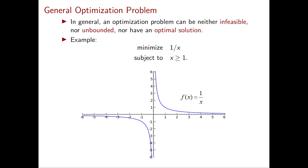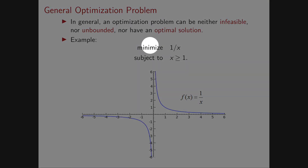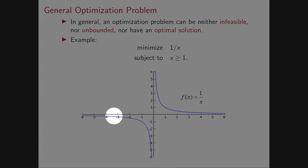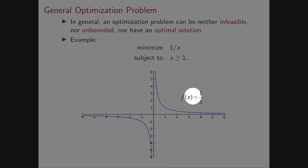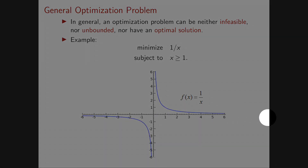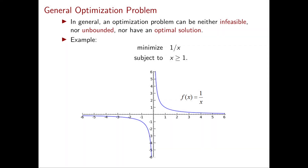Here is a simple example: minimize 1/x subject to x ≥ 1. The feasible region starts at 1 and goes to infinity. The objective value at 1 is exactly 1 and decreases as x increases. The value keeps decreasing forever, getting as close as you want to 0, but it never actually reaches 0.